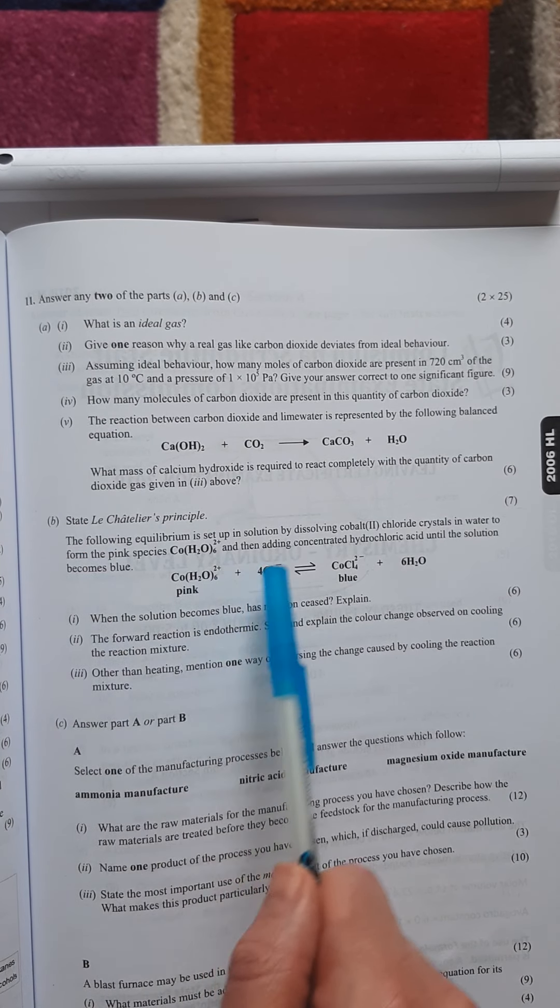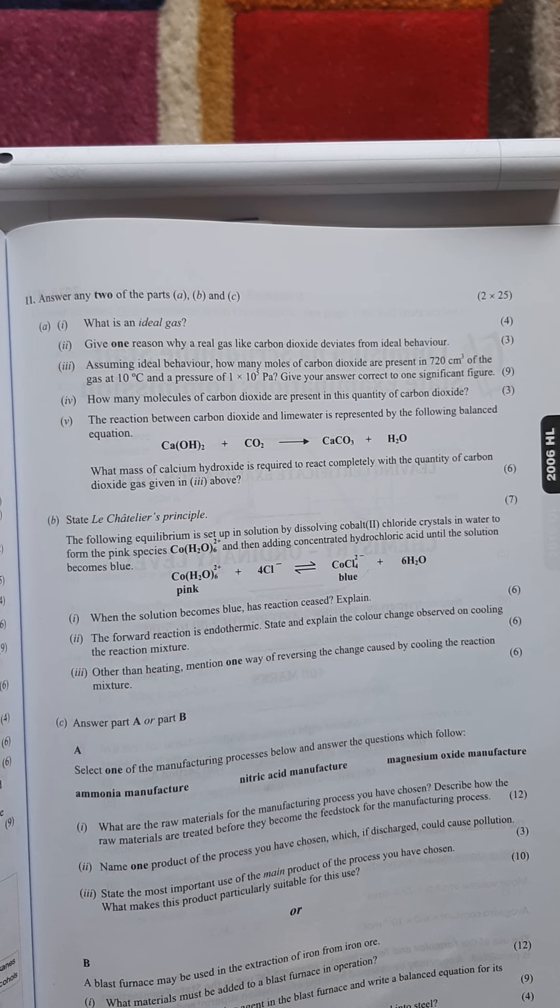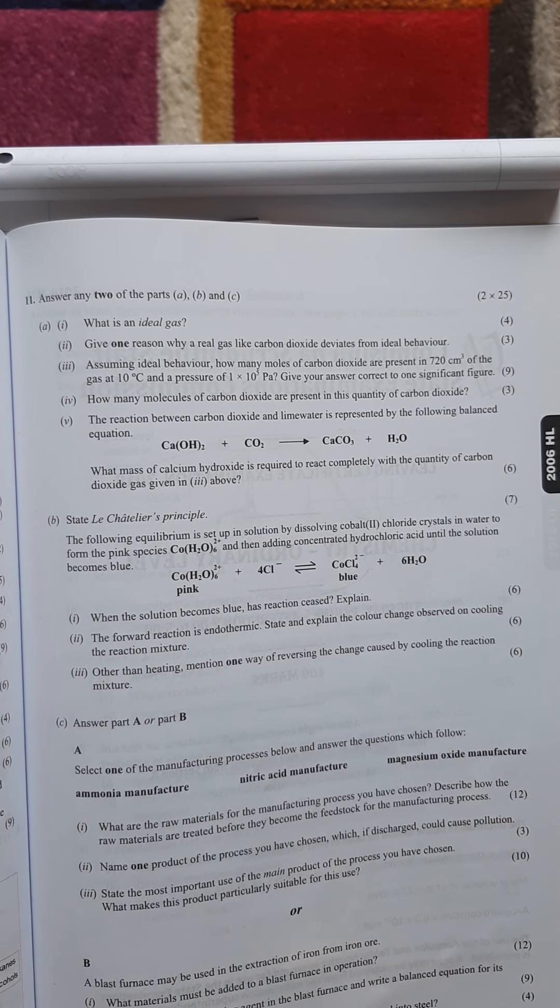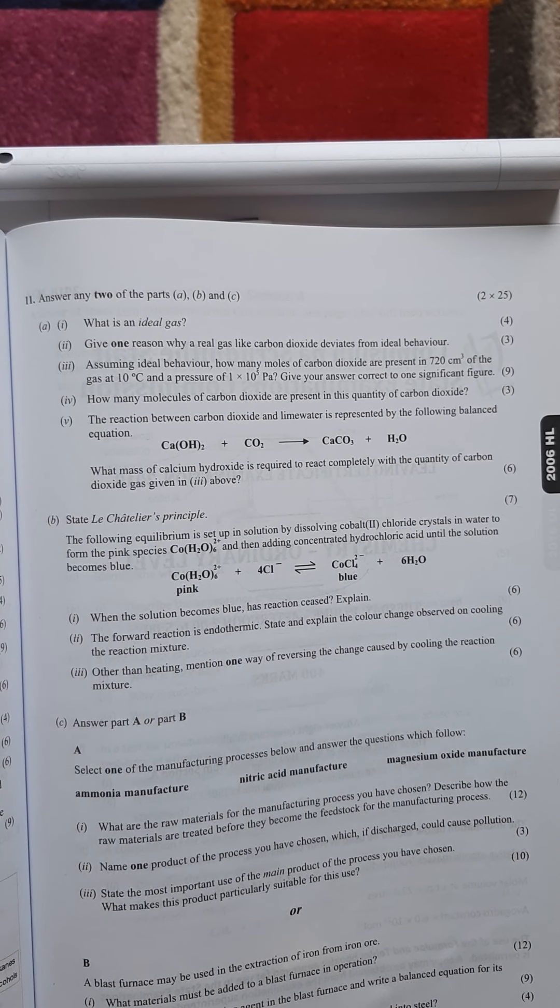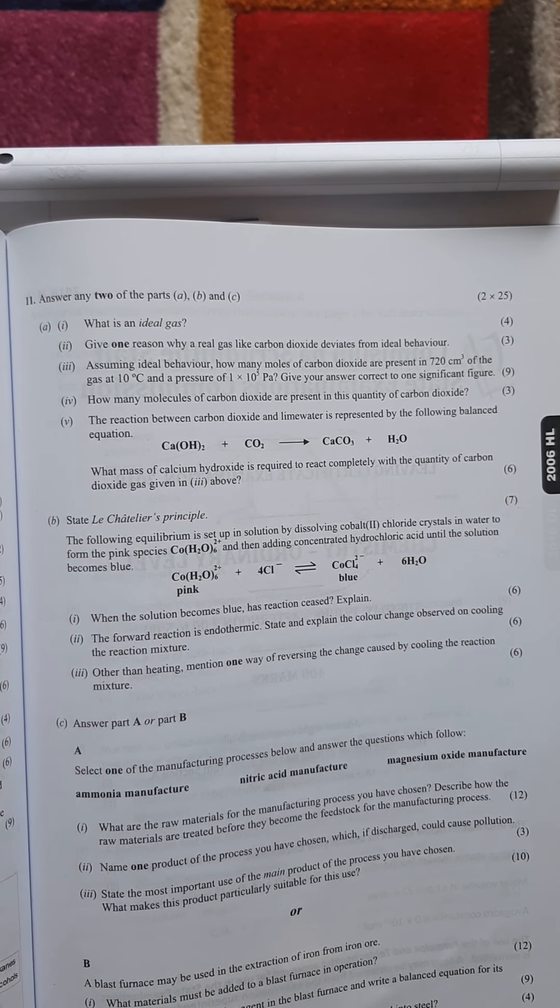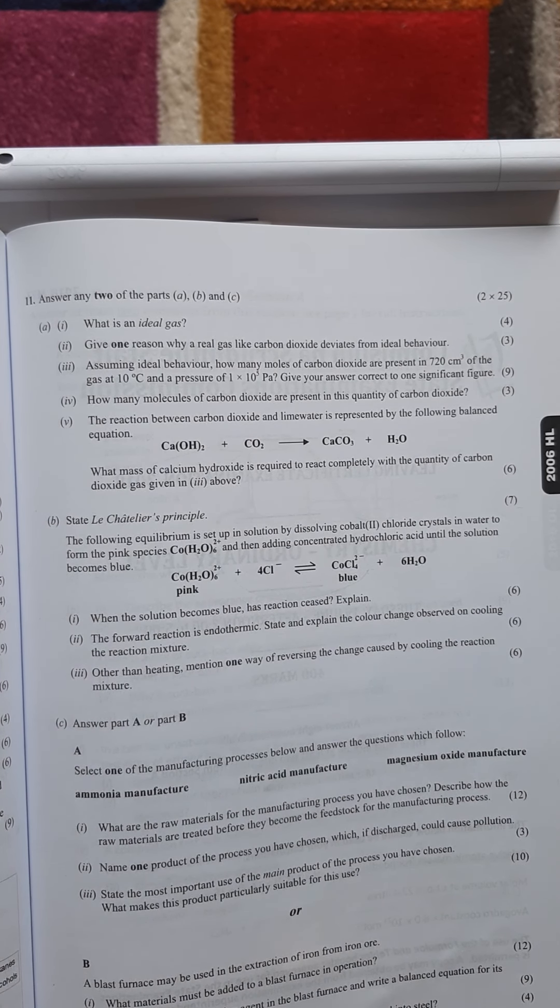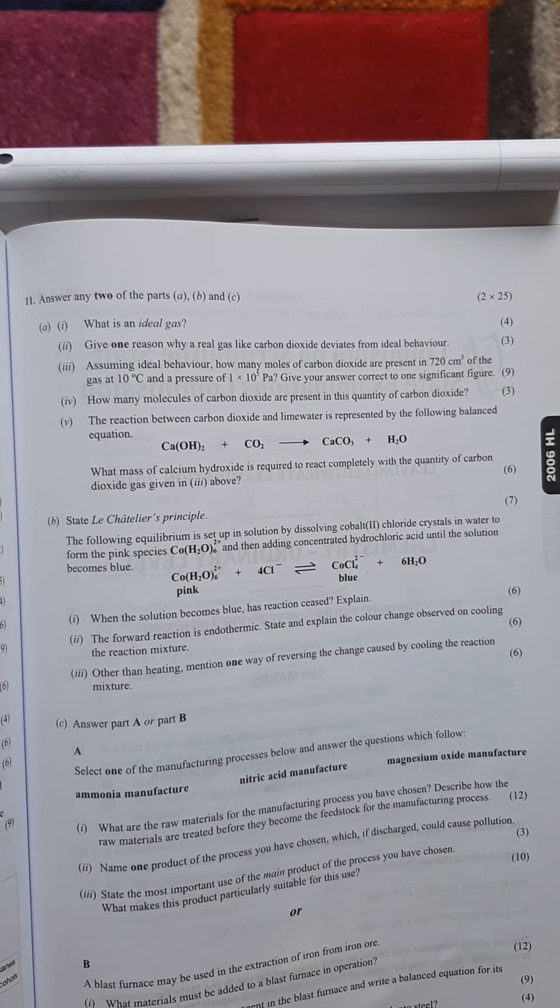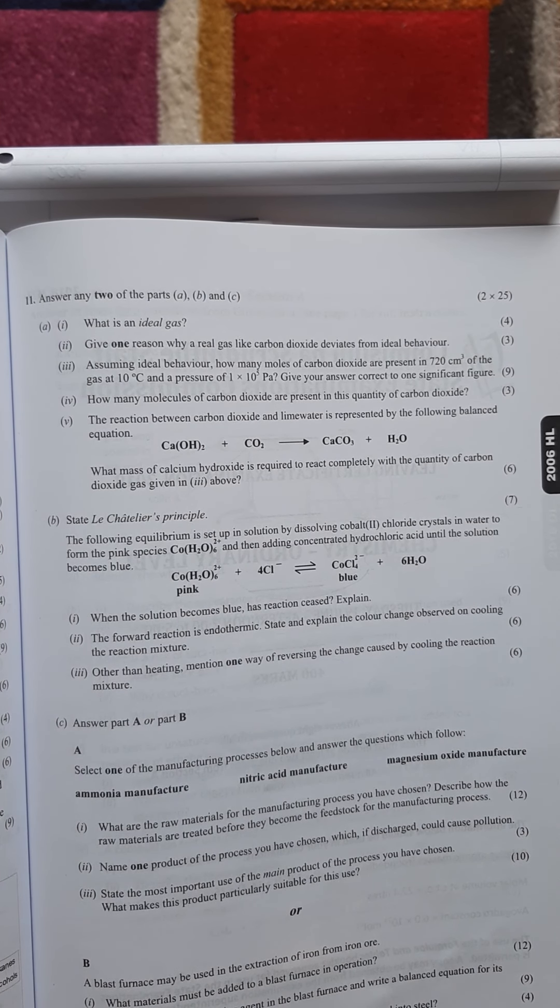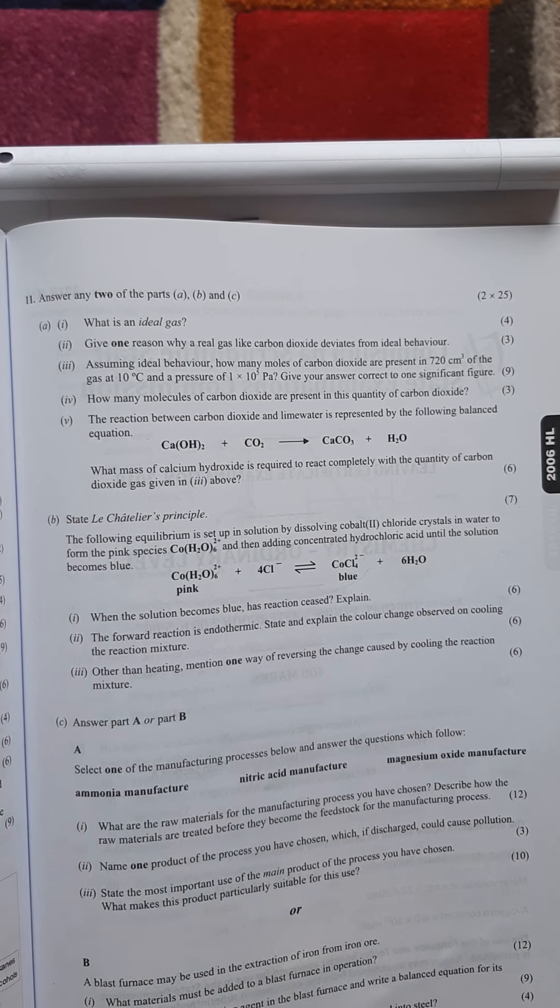We're just going to look at part B here, which is on chemical equilibrium. The first part is state Le Chatelier's principle for seven marks. So that's just a case of stating the definition: when a stress is applied to a system at equilibrium, the position of equilibrium readjusts to relieve the stress.